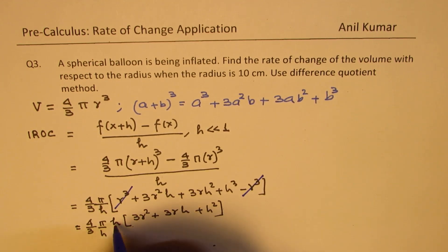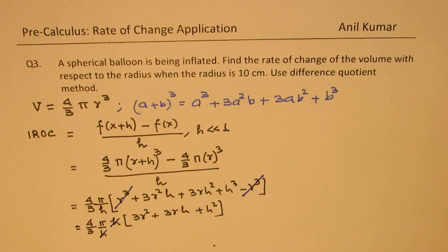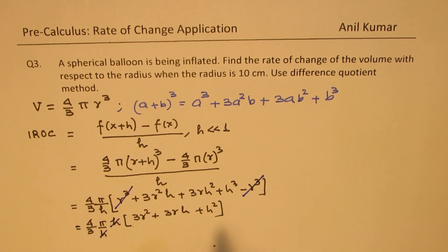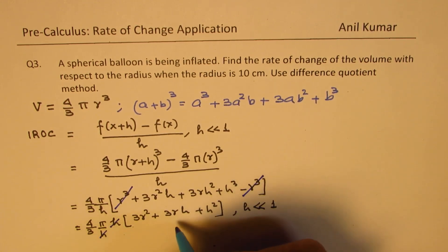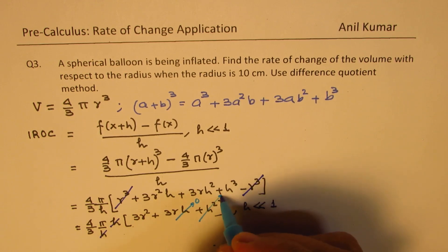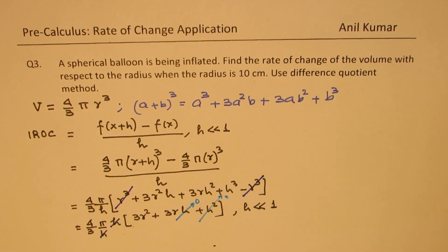Now we can cancel h and h. So we get a general expression for the instantaneous rate of change. We also know that h is very small as compared to 1, so it can be neglected. So these terms will be approaching 0. We are left with 3 r square.